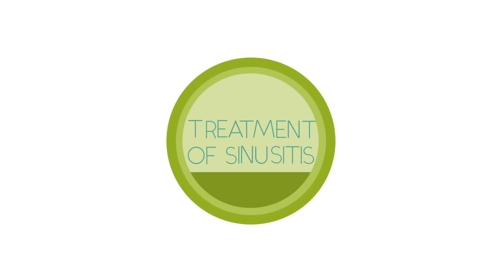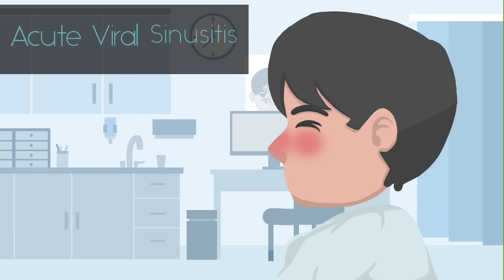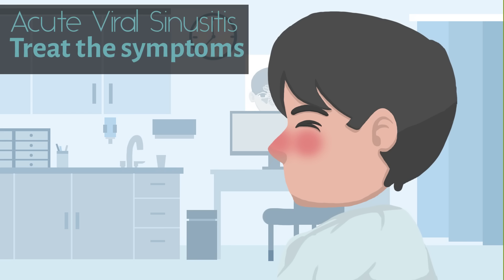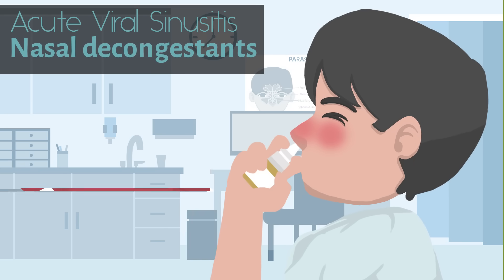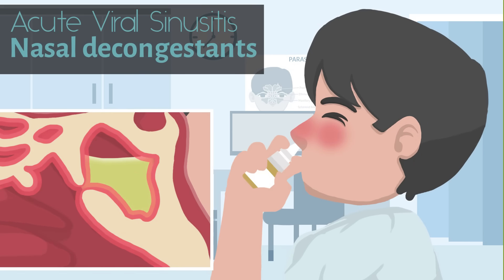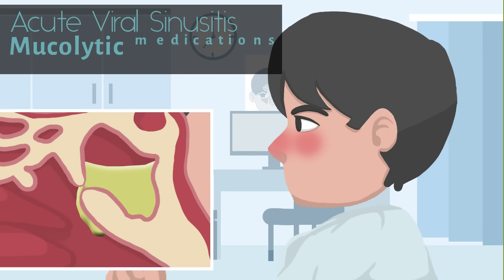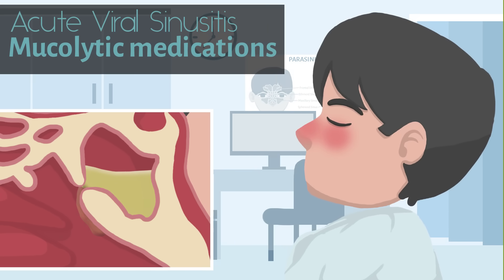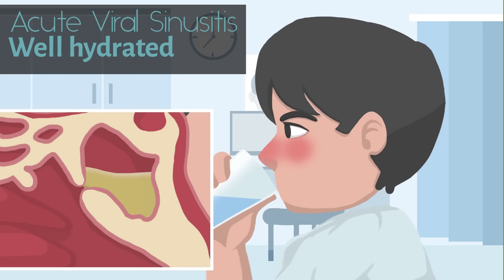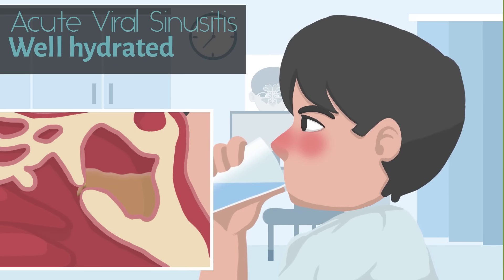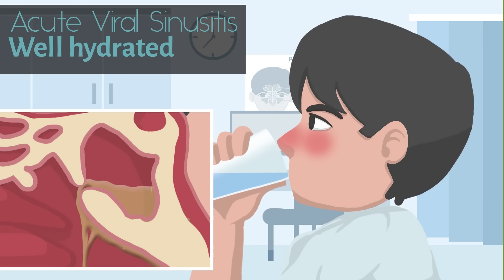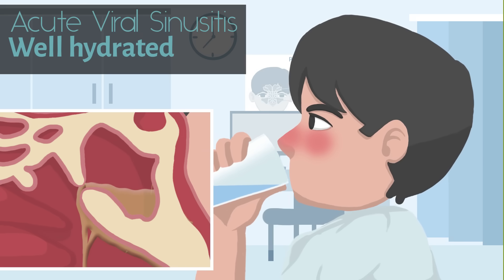How can we treat sinusitis? For acute viral sinusitis, the most common type, there is not a lot we can do to actually treat the disease itself, but we can treat symptoms. One of the first drugs to treat symptoms is going to be nasal decongestants. These medications shrink swollen nasal passages, facilitating the flow of drainage from the sinuses. We also give mucolytics medications, which help clear mucus. We also ask the patient to remain well hydrated, as being well hydrated helps in drainage of mucus.